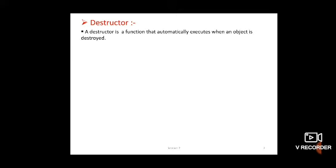Constructor means to construct the values — to construct the data whatever is declared in class. Destructor means the opposite of constructor: constructor constructs the values, destructor destroys the values through the object. That is the main difference. A destructor is a function that automatically executes when an object is destroyed, destroying whatever data is declared in the class.